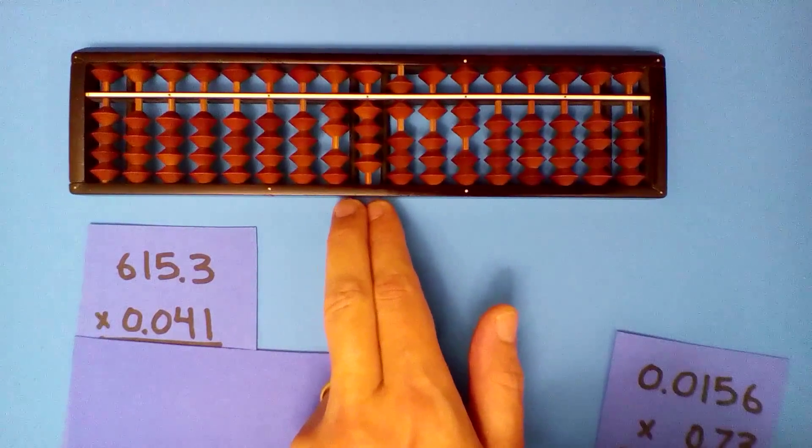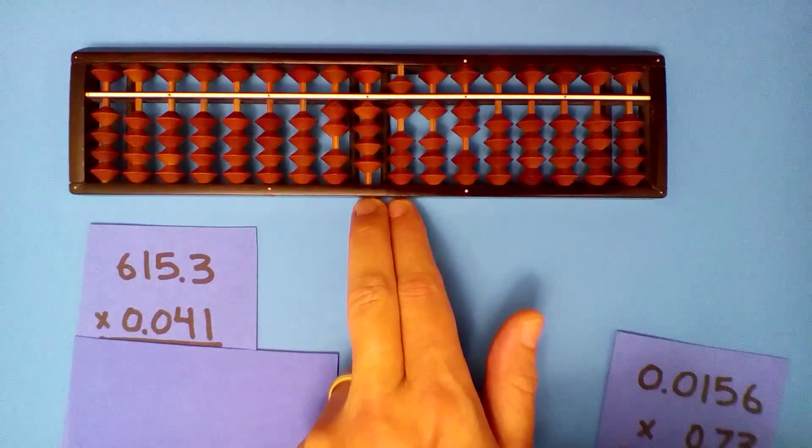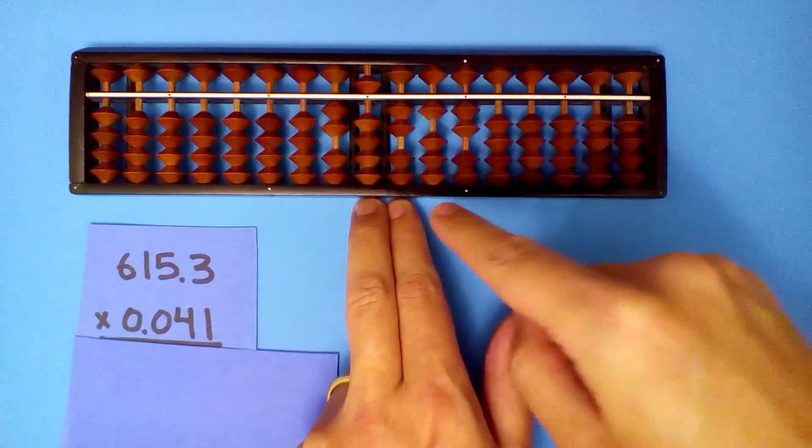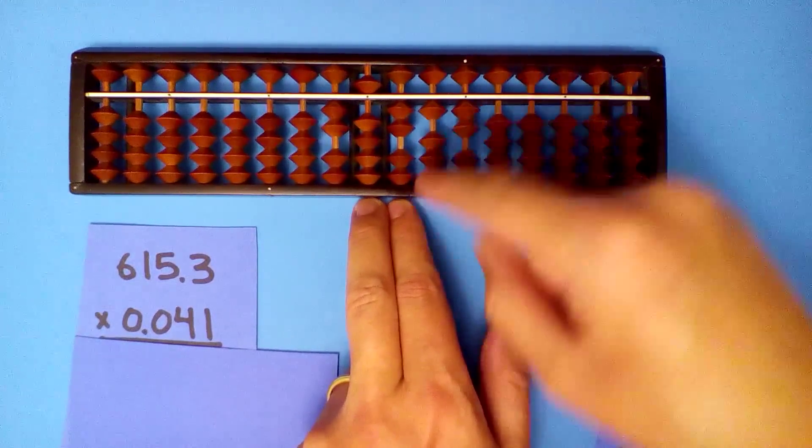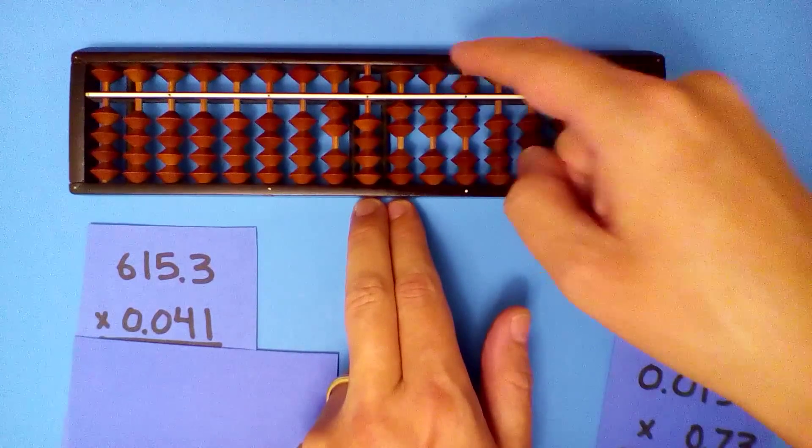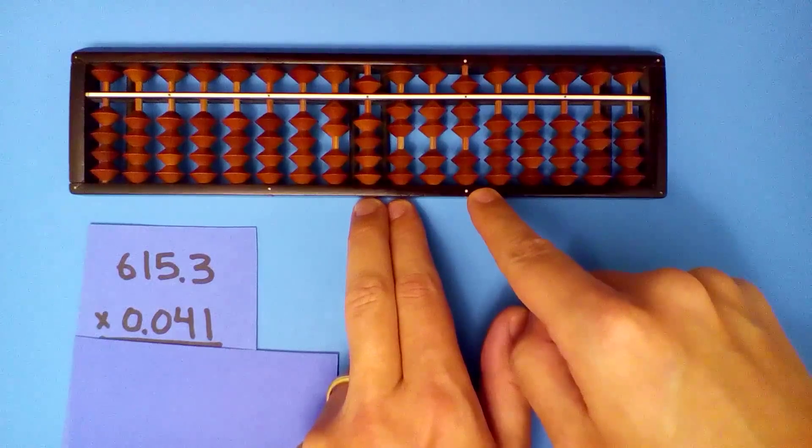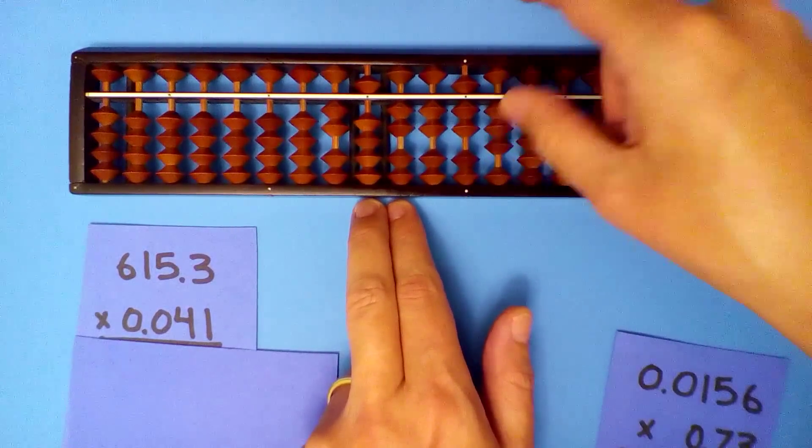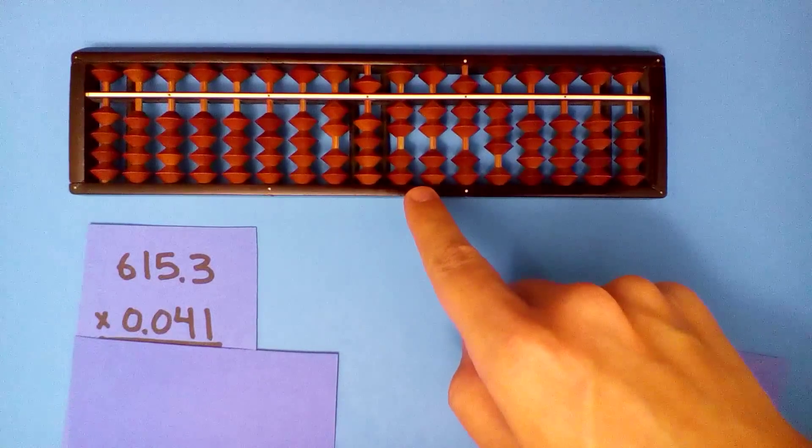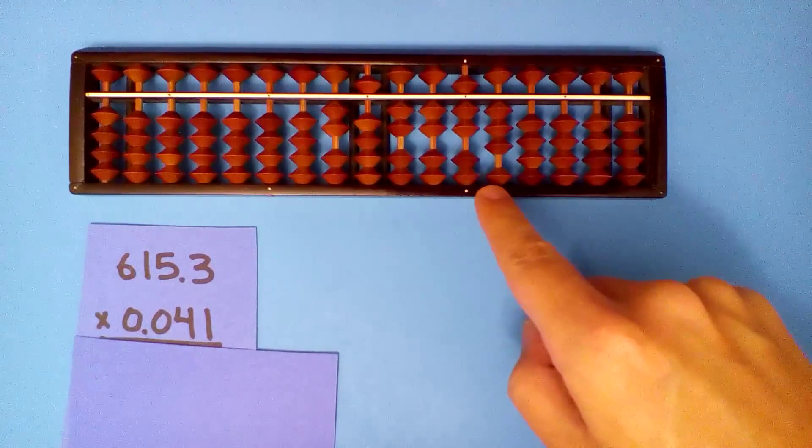One space to the right and use our one. One times six, six. One times one, one. One times five, five. One times three, three. Our answer, 25.2273.